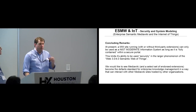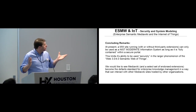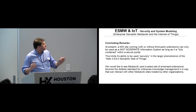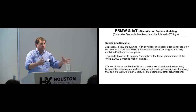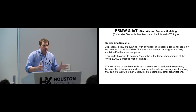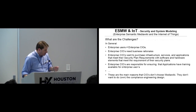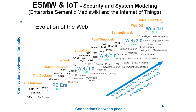A couple of concluding remarks: at present, a MediaWiki site running with or without third-party extensions can only be used as a NIST moderate information system as long as it is fully contained within a portal. That's tragic - because yes, you can deploy an enterprise MediaWiki, but you wrap it in a portal and don't let it talk to anything else. Running back to one of the earliest charts: we have a technology that can operate up at the Web 4.0 level, and because we can't do access control, it's forced to live in a box down at the lower level.